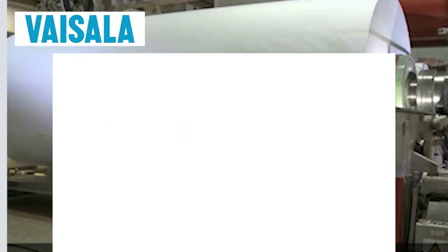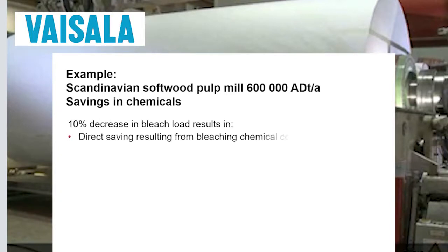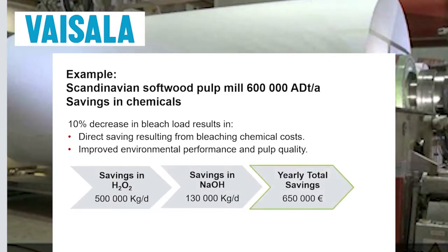Now, what about the savings in chemicals? In the same standard size pulp mill, cleaner pulp means less chemicals in bleaching. By decreasing the bleach load by 10 percent, the mill gets direct savings resulting from the bleaching chemical costs. In addition, the decreased bleach load improves environmental performance and enhances the pulp quality.